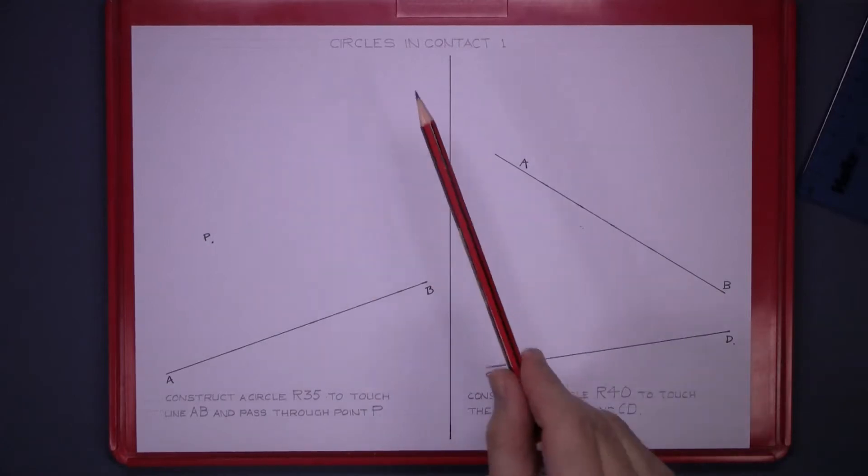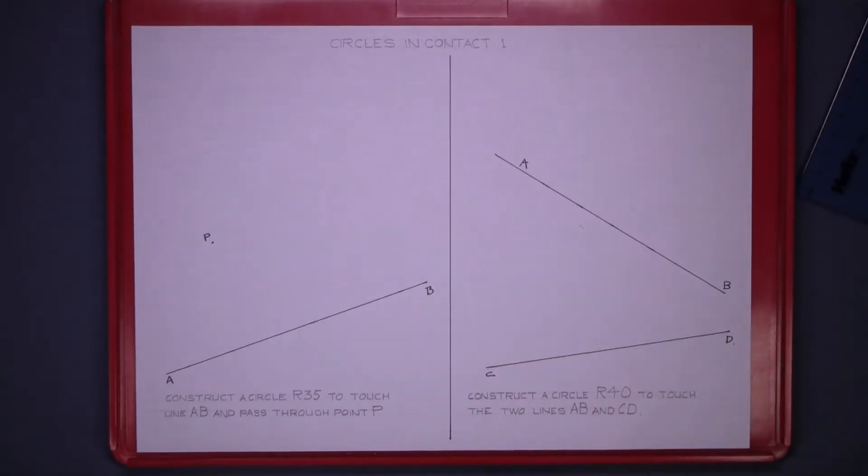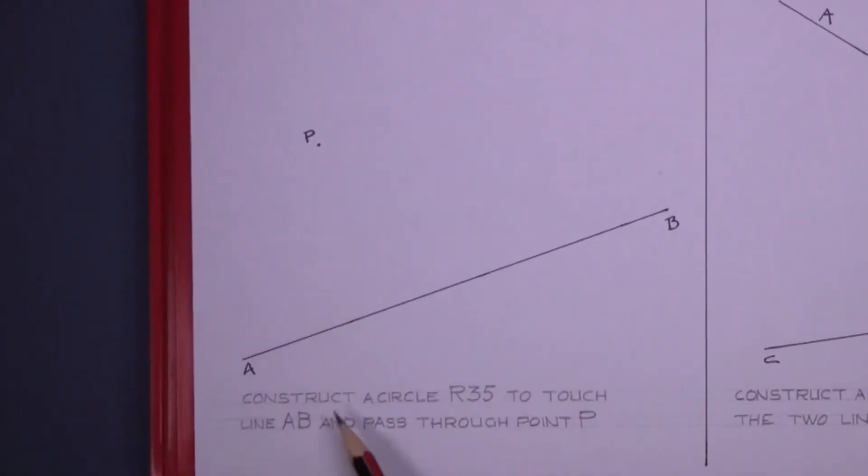Okay, your next exercise now is circles in contact. What circles in contact means is circles will either touch other circles or lines. In this case, it's in contact with line AB and point P. Construct a circle of radius 35 to touch line AB and pass through point P.